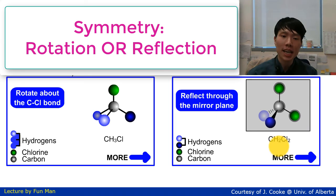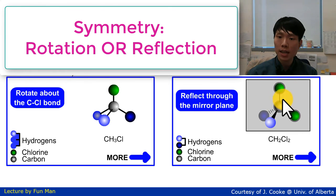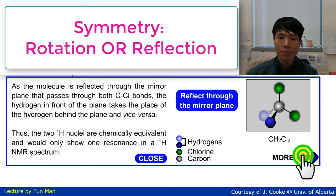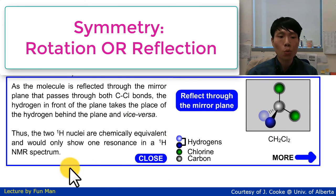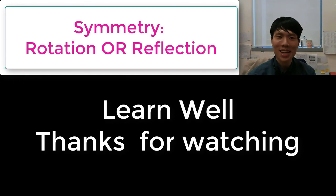For dichloromethane, when we perform a reflection through the mirror plane cutting through the two hydrogens (shown as green balls) and the central carbon, we can see that the two hydrogens are reflections of each other. Because they are identical, they will not couple with each other and will show only one signal in the proton NMR spectrum.